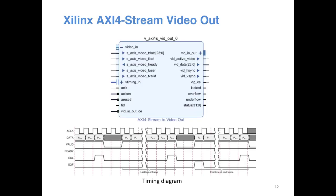We are going to use an IP core from Xilinx called AXI4-Stream Video Out to generate the video signal. This IP can be found in the Xilinx IP core directory. What it does is combine the incoming video signal with synchronization signals and send them out to the display. On the left there is an AXI4-Stream slave interface where we provide the video signal, and it also receives timing information for horizontal and vertical synchronization from another IP.